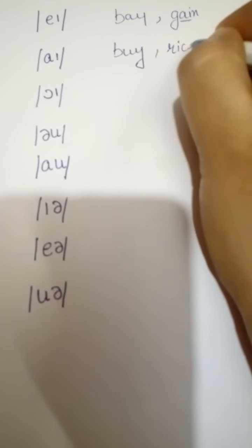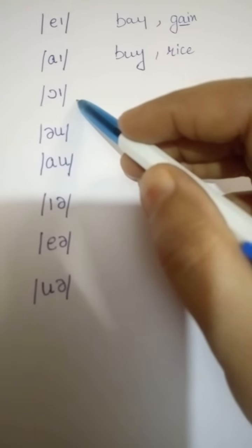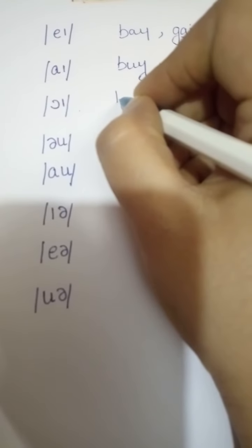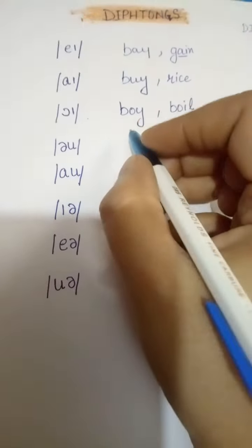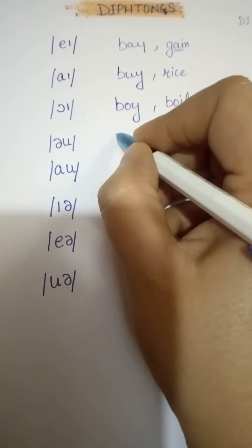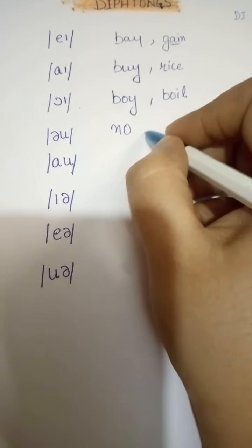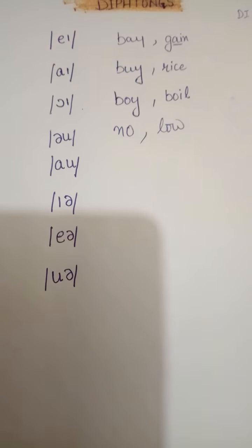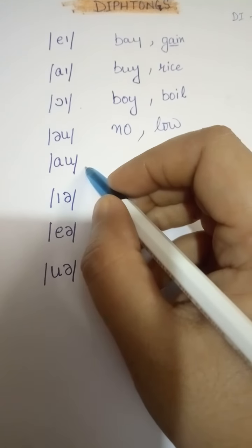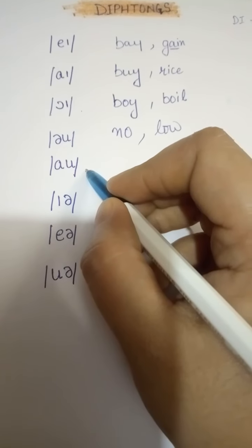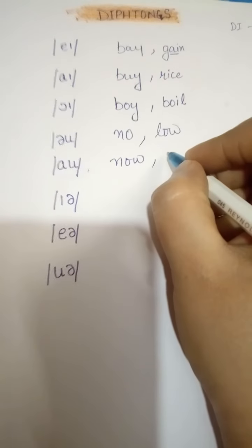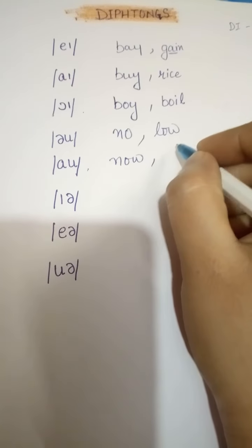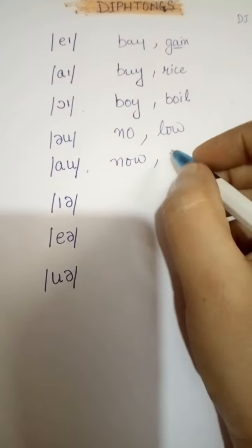Next is the 'oi' sound, for example 'boy' and 'boil.' Then there is the 'oh' sound as in 'no' and 'low.'